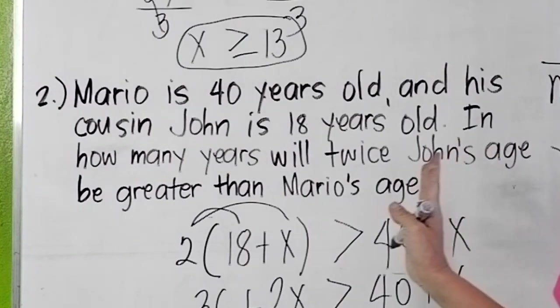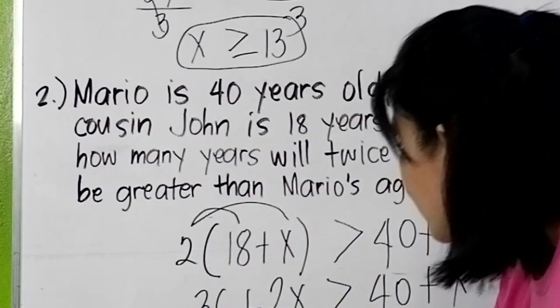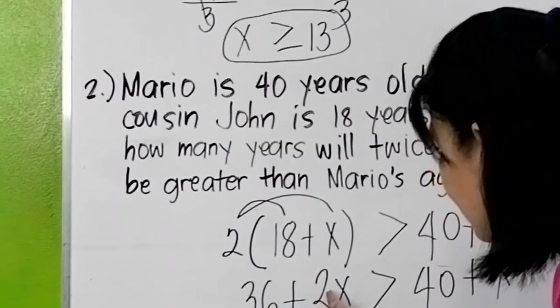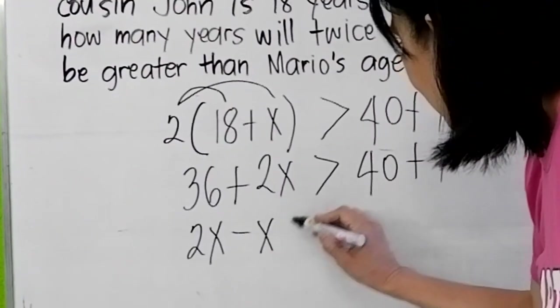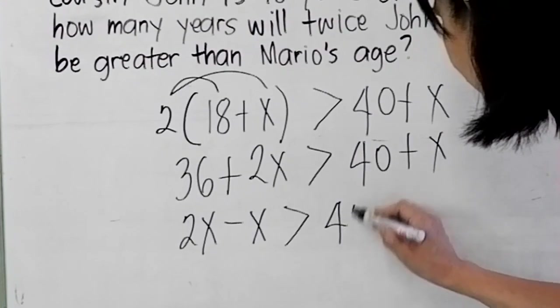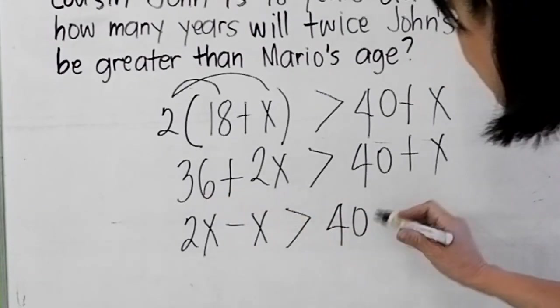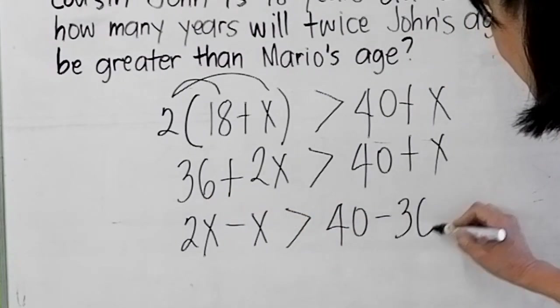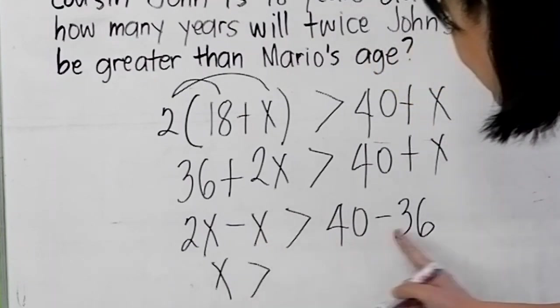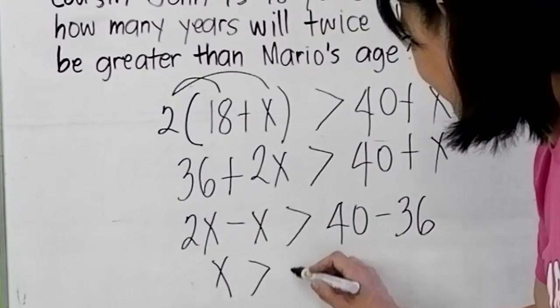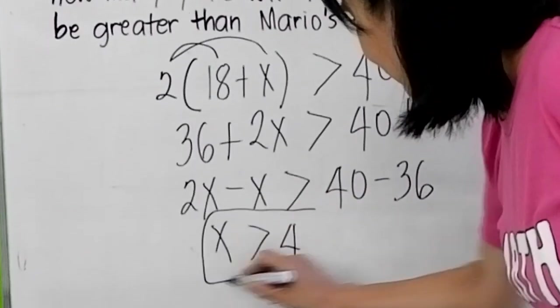Let's solve this. Distribute 2, 2 times 18 that is 36, plus 2 times x is 2x, is greater than 40 plus x. Combine all those with x's on one side, so we have here 2x, transpose x, minus x, is greater than 40, transpose 36 becomes negative 36. So x is greater than 40 minus 36 is 4.